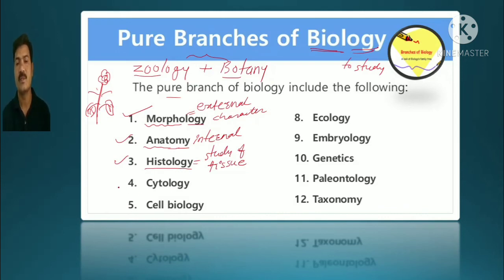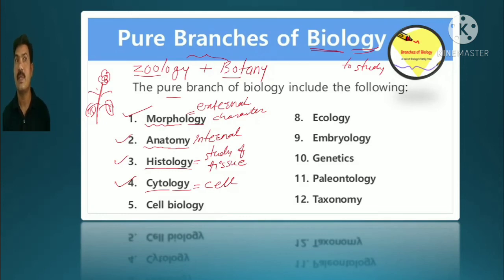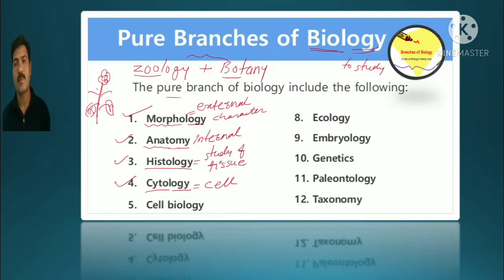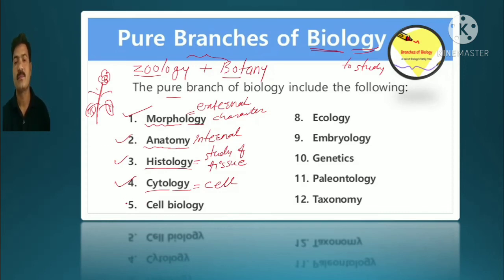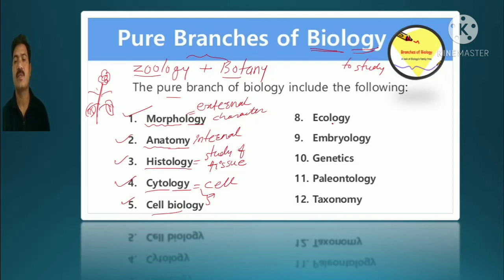The next very important branch is cytology — the study of the cell. 'Cyto' means cell. Cells form tissues, tissues form organs. Cytology studies what is inside a cell — mitochondria, nucleus, how organelles function. Cell biology and cytology essentially have the same meaning.